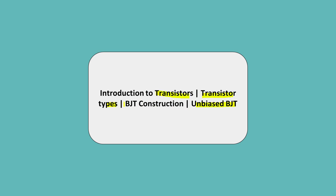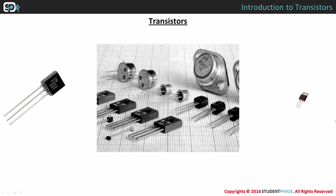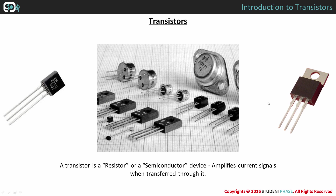We all might have seen transistors in circuit boards, but we may not have recognized them as transistors. Most common types of transistors look like these. A transistor is a semiconductor device that can amplify electrical signals as they are transferred through it.